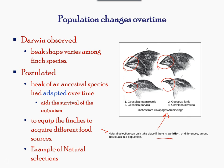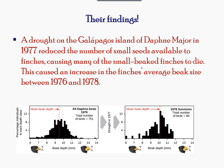As seen from the chart on the slide, birds with smaller beaks died as fewer small seeds were available to eat. This was because of the drought period, which paralleled the disappearance of small-beaked finches.